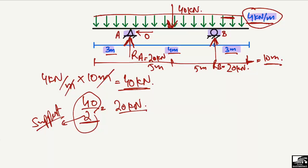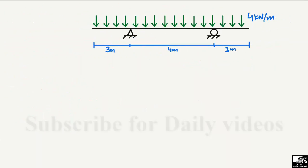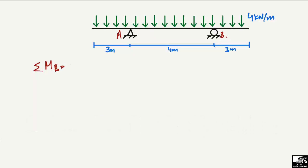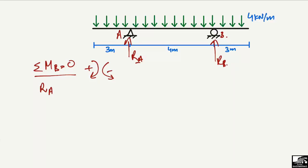Now to find the support reactions by the conventional method using equilibrium equations. We have the same supports at A and B. Taking the summation of moments at point B equal to zero. Clockwise moments are taken as positive and anticlockwise moments as negative. RA will create a clockwise moment about point B, so it is taken as positive.